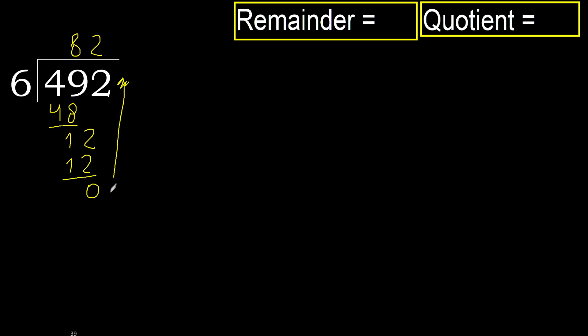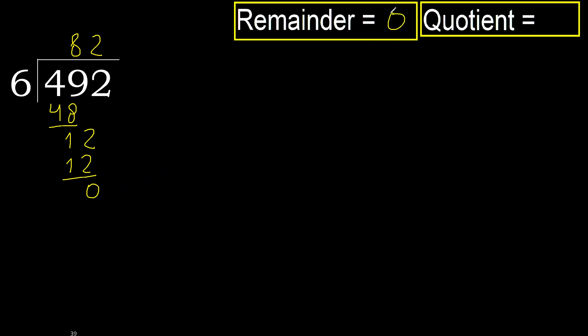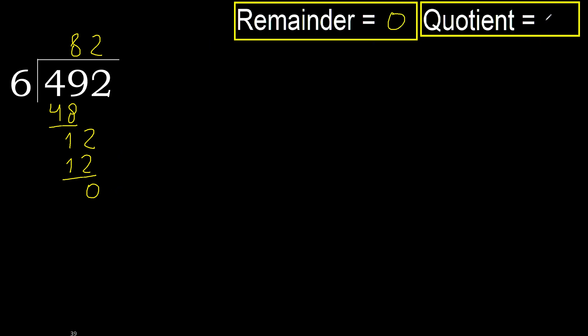That is not a number, therefore finish it. Ok, 492 divided by 6 is 82.